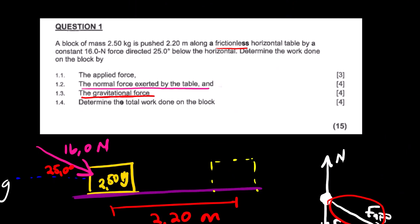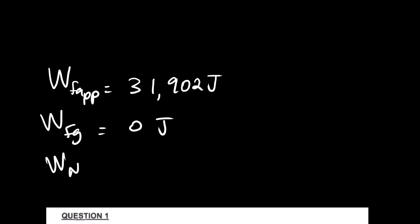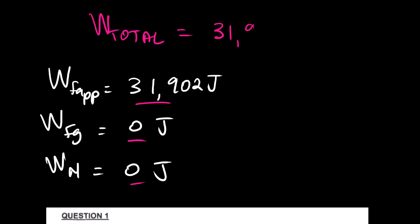The last question asks us to determine the total work done on the object. We look at all the forces: work done by the applied force is 31.902 Joules, work done by Fg is 0 Joules, and work done by the normal force is 0 Joules. Taking the sum: total work done equals 31.902 plus 0 plus 0, which equals 31.902 Joules.